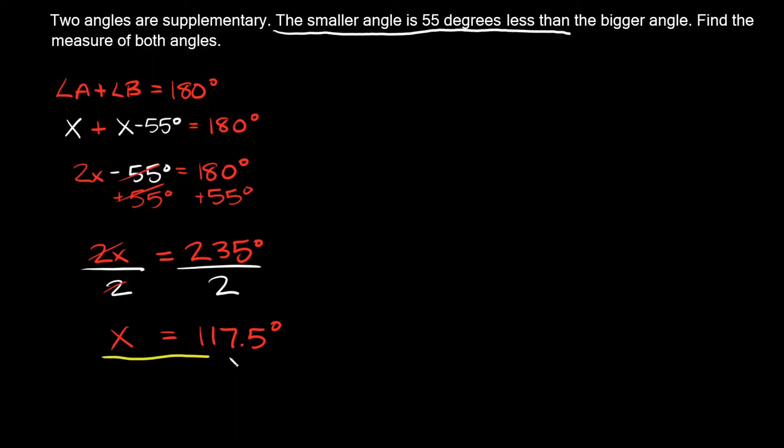Cool, now I know what X is equal to. So now that I know what X is equal to, now I can plug it back into this original equation we made. So remember angle A we said was X, so angle A was equal to X. And then we said angle B was equal to X minus 55 degrees.